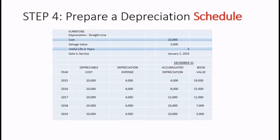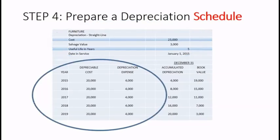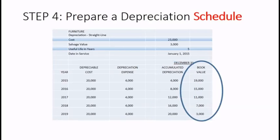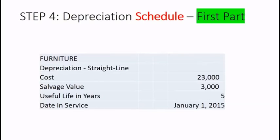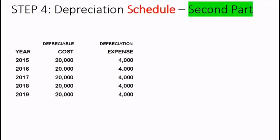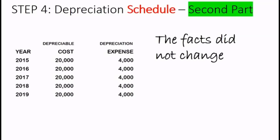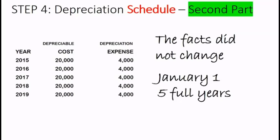Step four is to prepare a depreciation schedule. This is a little more involved, so we'll break it up into four parts: the top part, the left part, the accumulated depreciation column, and the book value column. The top part is our given information from step one — for example, we'll write that we have office furniture that we're depreciating for five years. The left-hand side lists those five years and also gives us the depreciable cost. The facts did not change, so our depreciable cost did not change. We put this asset on the very first day of the fiscal year, and that's why our depreciation expense is $4,000 every year.